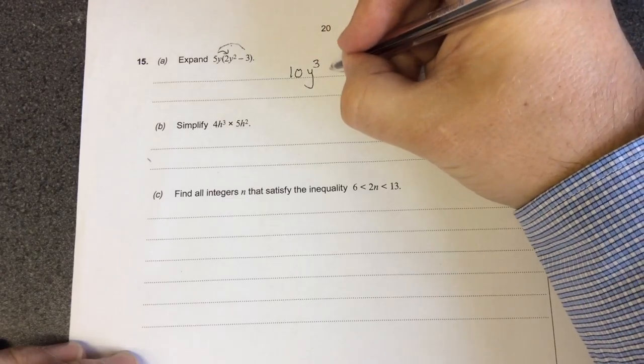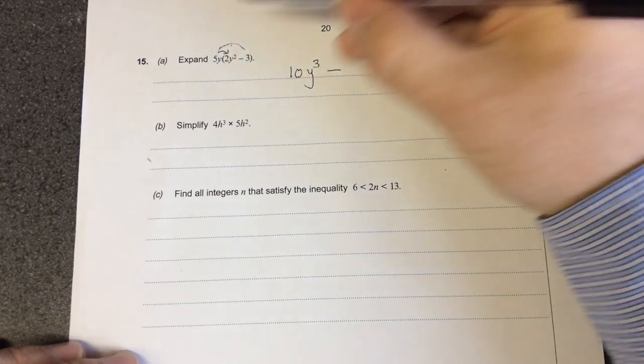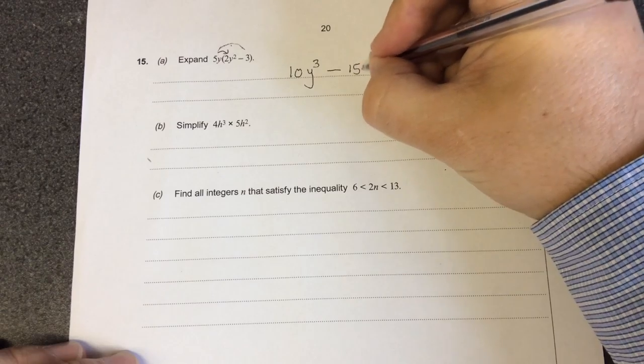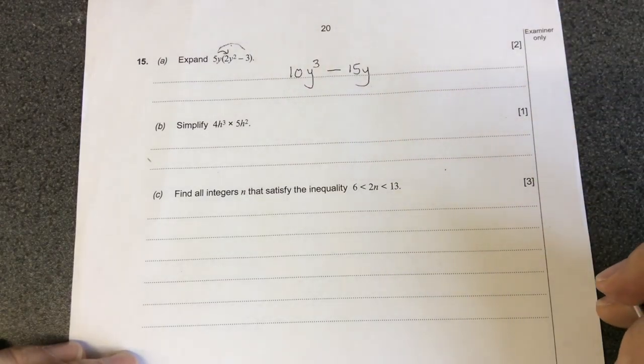5y times minus 3. A plus times a minus makes a minus. 5 threes of 15 and you've got the single y outside the bracket.